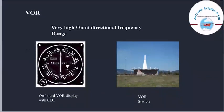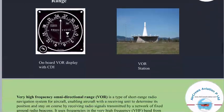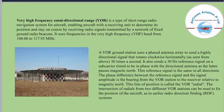Coming next to VOR. VOR stands for Very High Frequency Omnidirectional Range. In this picture, we can see an on-board VOR display with CDI, and next to that we can see a VOR station. VOR is a type of short-range radio navigation system for aircraft, enabling aircraft with a receiving unit to determine their position and stay on course by receiving radio signals transmitted by a network of fixed ground radio beacons. It uses frequencies in the VHF band from 108 to 117.95 MHz.